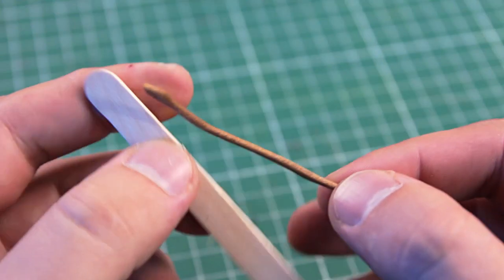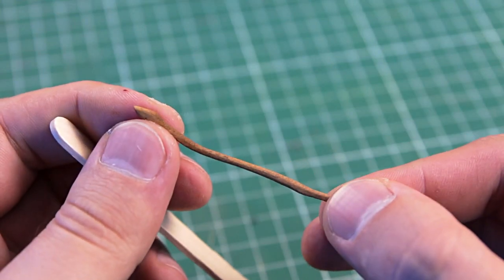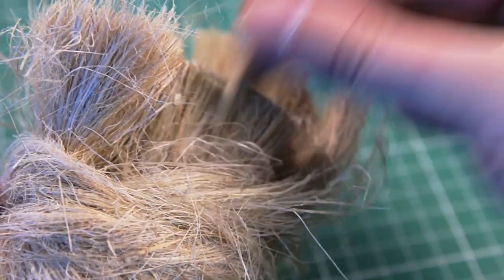I made the broomstick out of an ice cream stick and soaked it in wood stain. And I made the broom out of linen fiber.